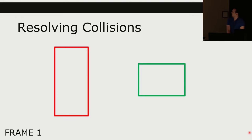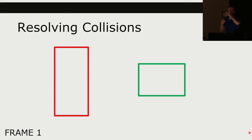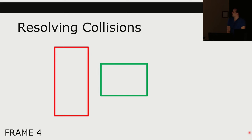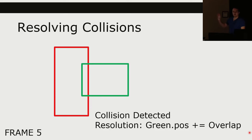Let's look at a collision example. We've got two rectangles on frame one of the game. Each frame involves two steps: updating positions and rendering. On frames one through four, the green rectangle is moving to the left. On frame five, before rendering, this is what it looks like to the game's physics — we've detected this collision, we have a non-negative overlap rectangle with overlap in both x and y.